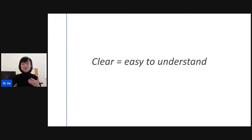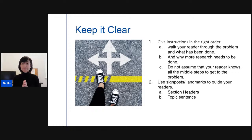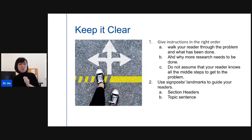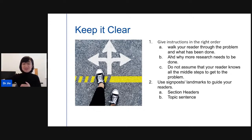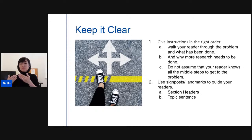The first element: be clear. Clear means easy to understand. Writing clearly is like giving instructions in the right order — like giving directions. You don't skip the middle steps; you guide someone step by step so they don't get lost. You do not assume your reader knows all the middle steps. For example, you have to establish what the problem is, what has been done, why it isn't working, and then why you want to do the research.